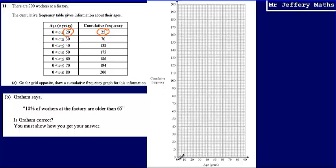So that's going to give us, the age is 20, end of the class interval is 20, and we are matching that up to 25, which is about there. Then 30 with 70, which is about there.